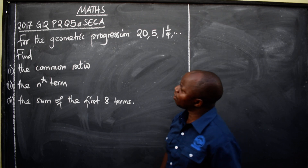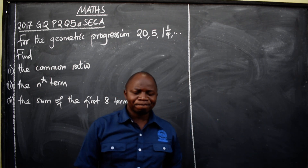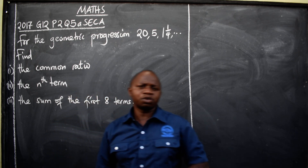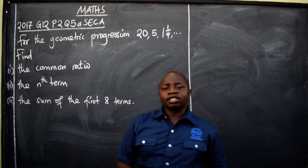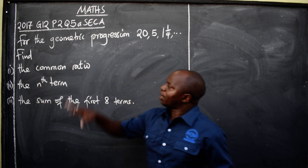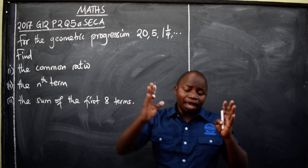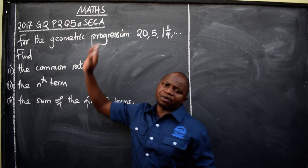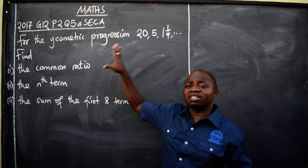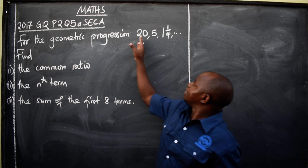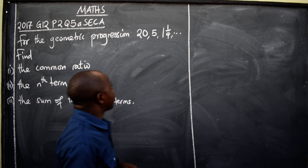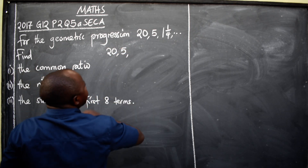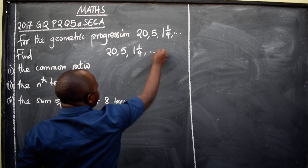Which topic is this? Sequences and series. We have two major types of sequences: AP — arithmetic progression — and GP — geometric progression. So this one is GP. We have been given this GP: 20, 5, 1, 1/4, and it goes on.